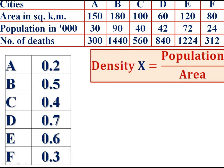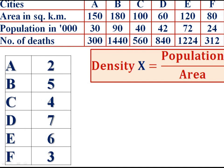The density values are 0.2, 0.5, 0.4, 0.7, 0.6, and 0.3. Since the population is given in thousands, multiply all these values by 10 to get the x variable — density — as: 2, 5, 4, 7, 6, and 3.